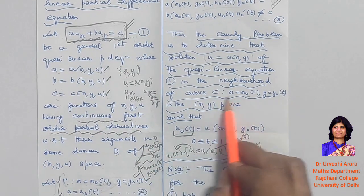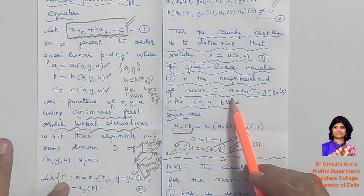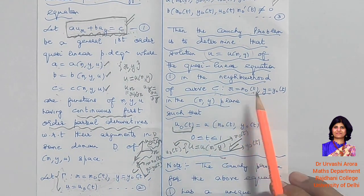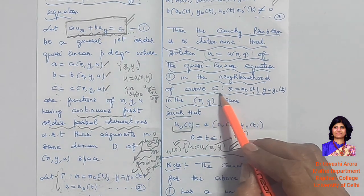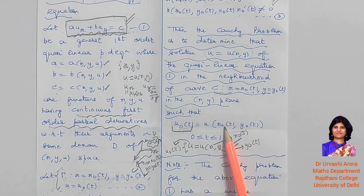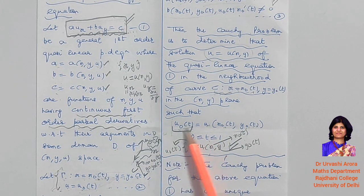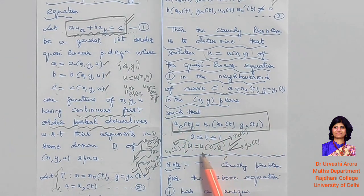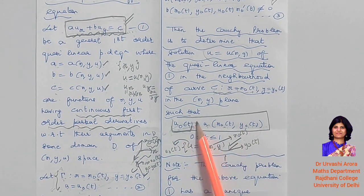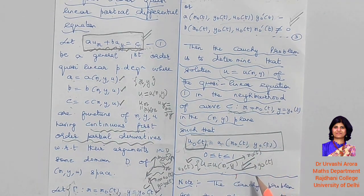The curve gamma is in the x, y, u space. If you take its projection onto the x, y plane — in layman's language, taking the shadow of gamma — it simply becomes x = x₀(t) and y = y₀(t), which is the curve C. Given the initial curve C in the x, y plane or gamma in x, y, u space, the condition u(x₀(t), y₀(t)) = u₀(t) must be satisfied. Any solution satisfying this is the Cauchy solution.